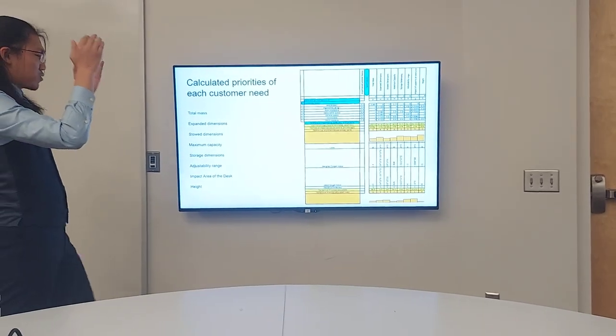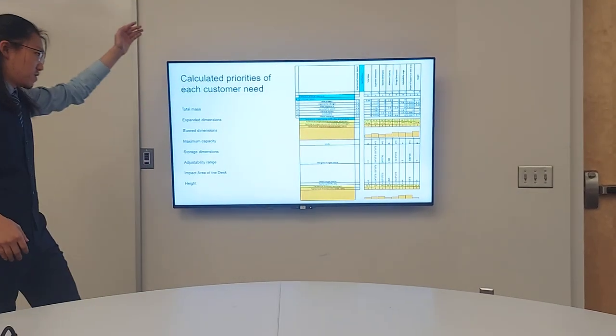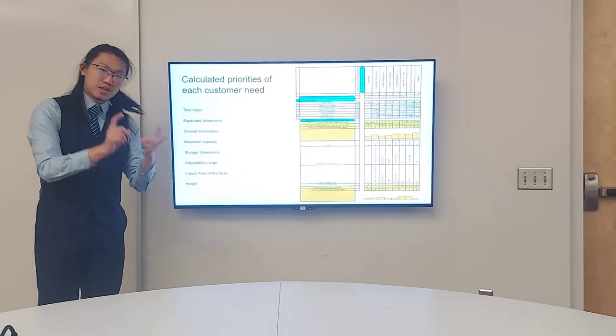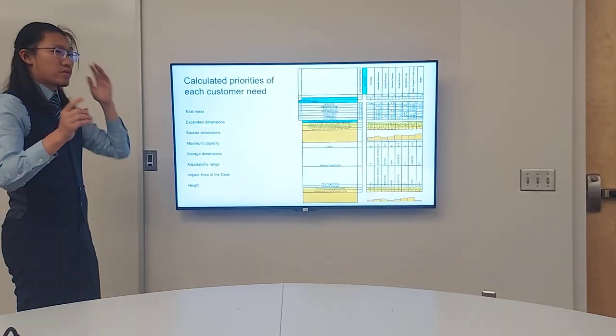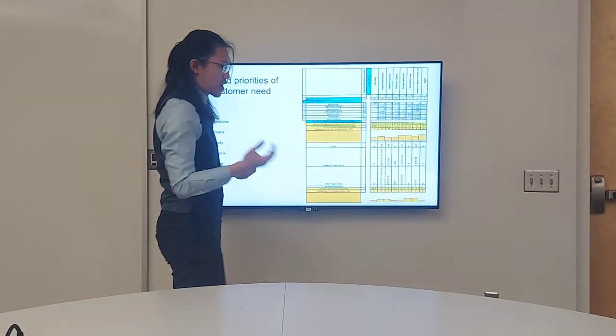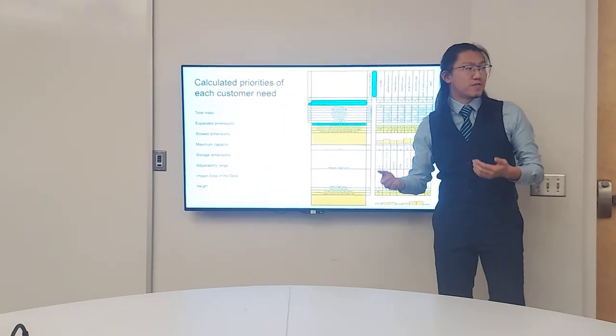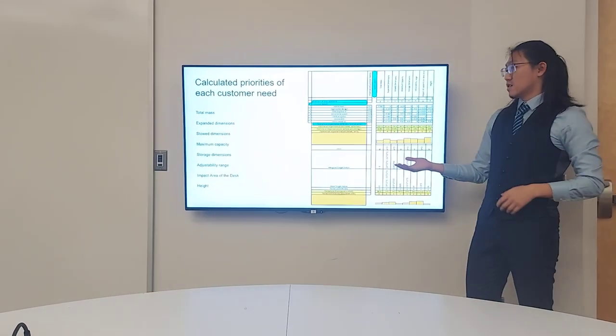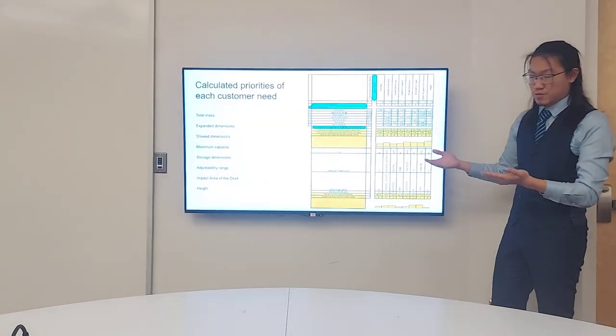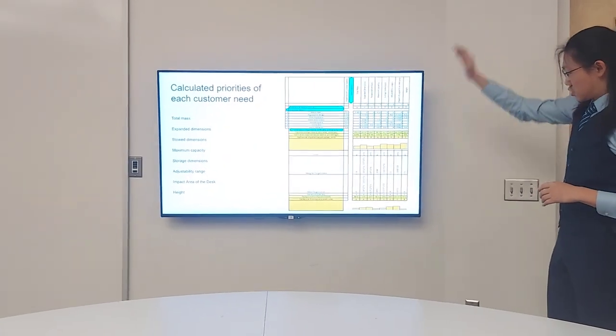We came up with this QFD graph here. If you cannot read this, we list from left to right: total mass suspended, dimensions, maximum capacity, and so on. One thing you need to know is the desk impact area. This measures the area of support connected to the table. For example, if you want a monitor stand, how much area is taken on the table to make sure we can lift the monitor up.